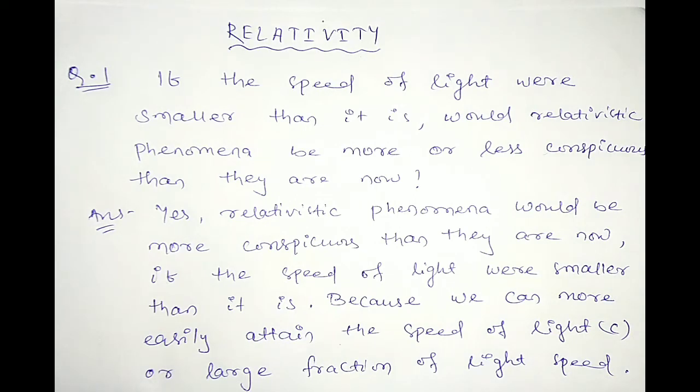If the speed of light is smaller, we are able to move at speeds that are a larger fraction of the speed of light. In such cases, the relativistic effects would be more conspicuous. Hence, the relativistic phenomena would be more conspicuous.